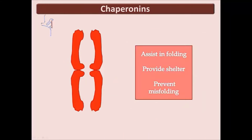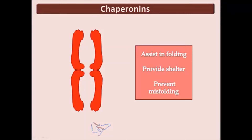Chaperone proteins, or chaperonins, assist in the folding of other proteins. These proteins are crucial in that they provide a shelter for proteins as they fold to ensure proper folding into a natural state. A polypeptide enters the chaperonin and an environment is formed where it can fold into its natural state. Without this shelter, polypeptides can be misfolded when important weak bonds are disrupted. Sometimes tertiary structures form partial quaternary structures and protein subunits are formed; however, these subunits are not functional proteins because additional protein subunits are lacking.